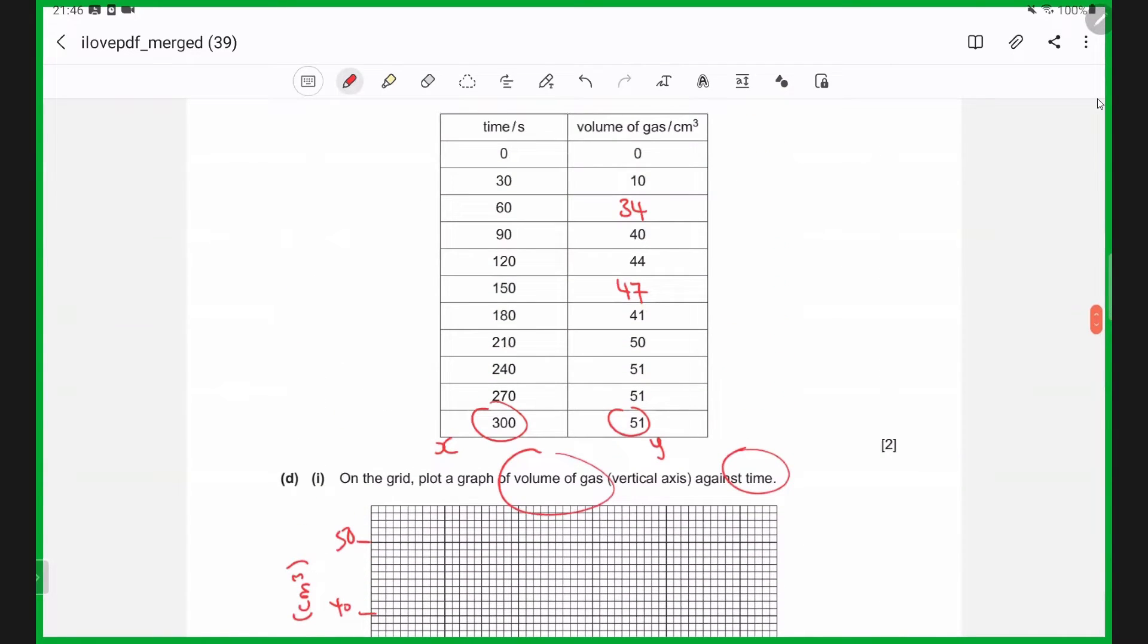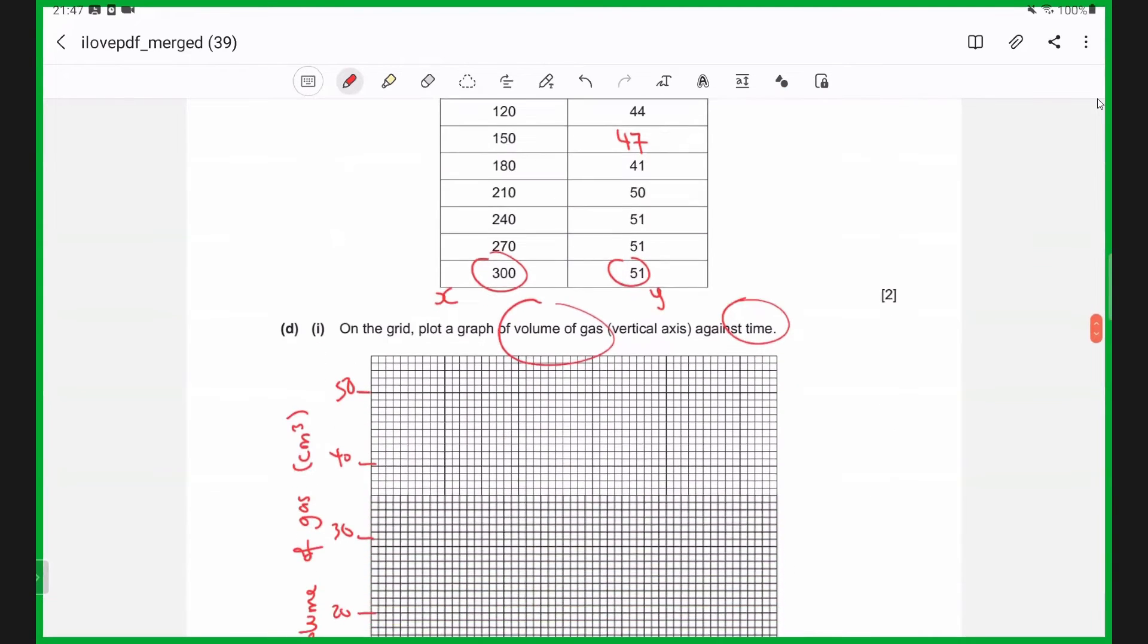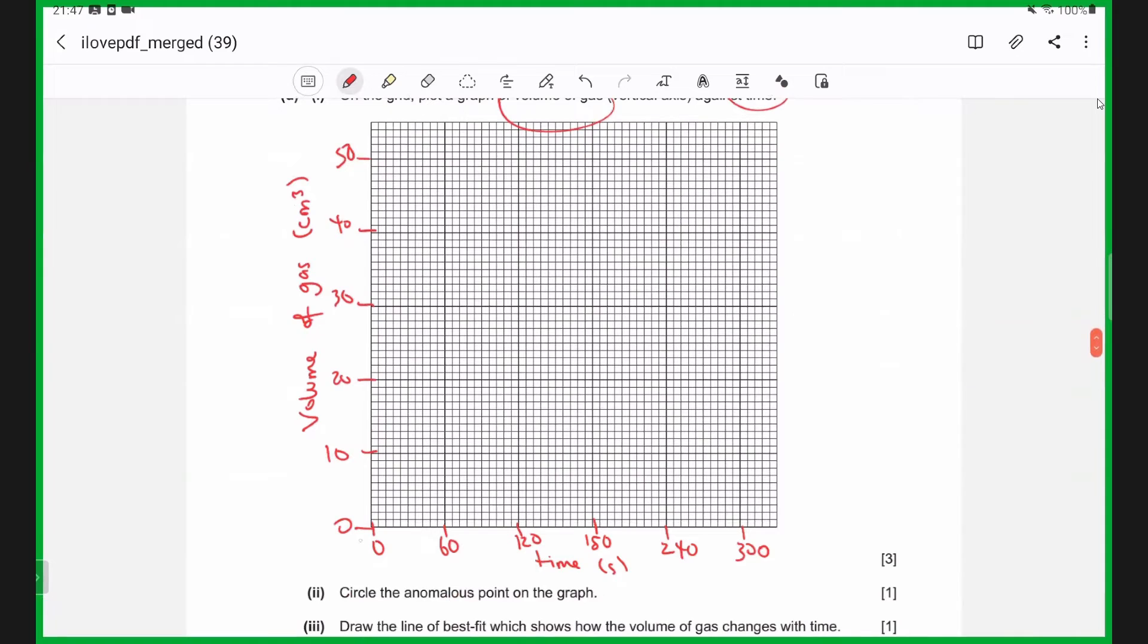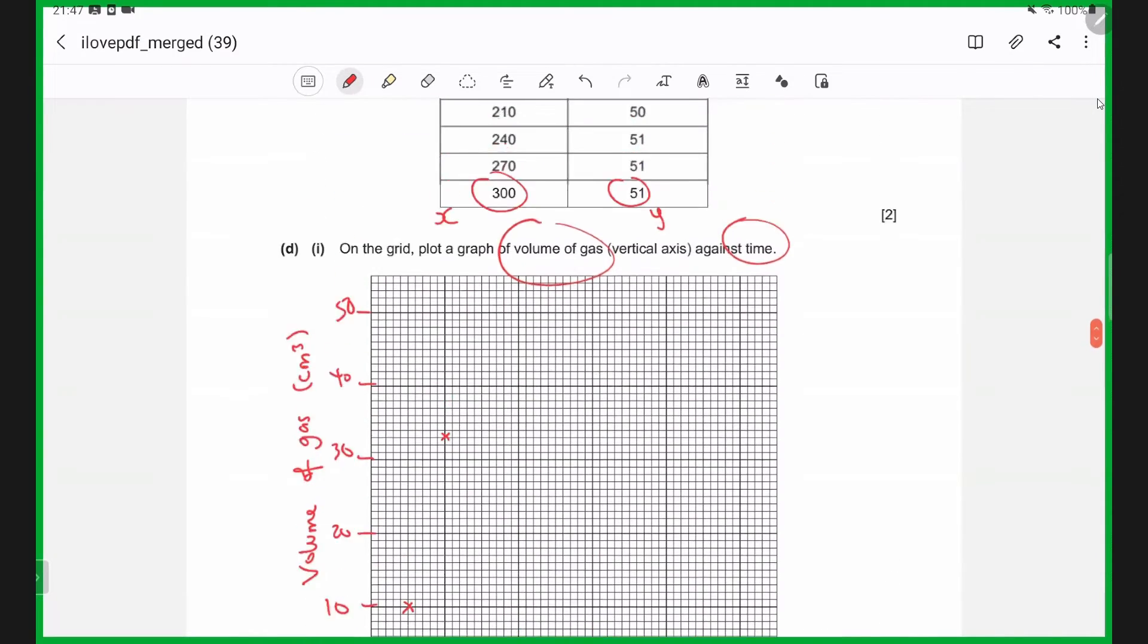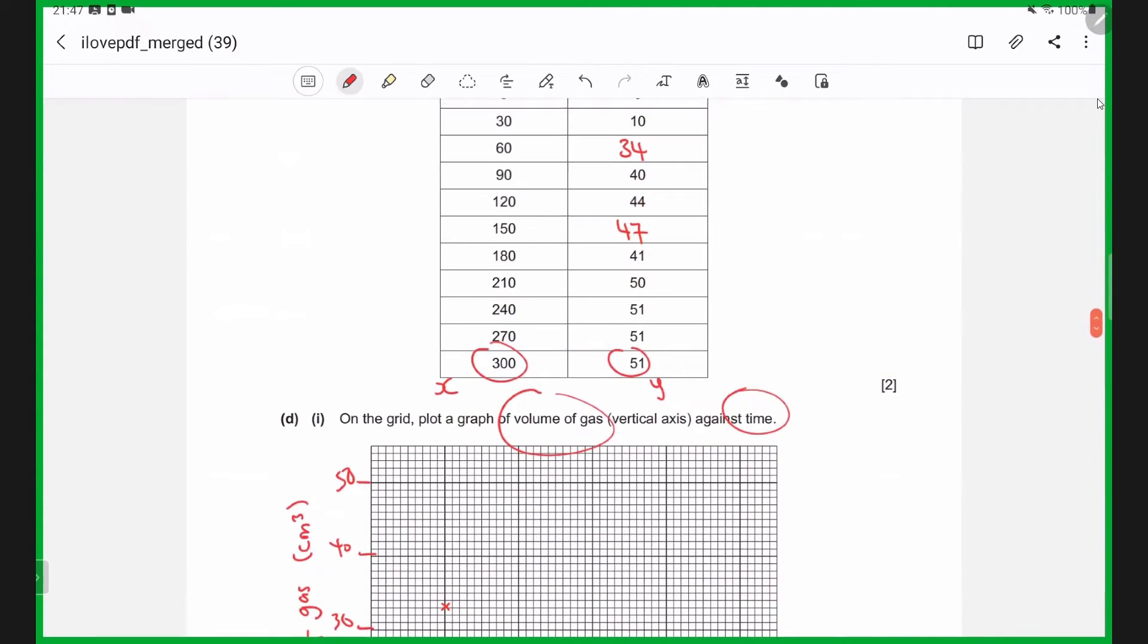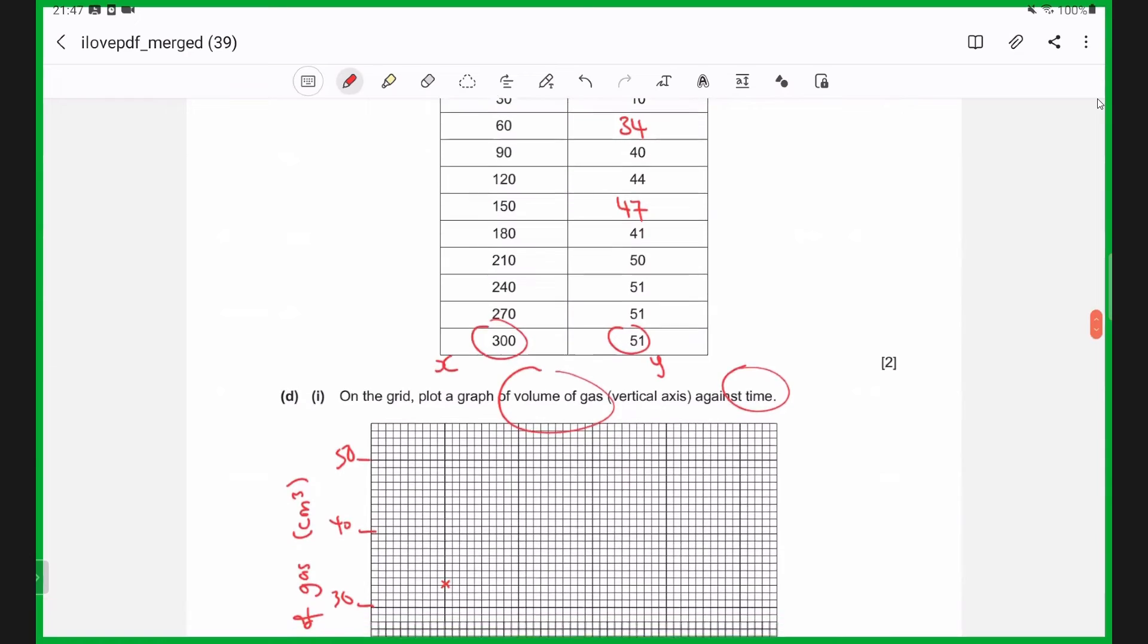Then we simply have to plot all the points. Remember, first we have 0, 0, then 30, 10, then 60, 30. Then we have 90, 40, 120, 44, 150, 47. So 40, 44, 47.